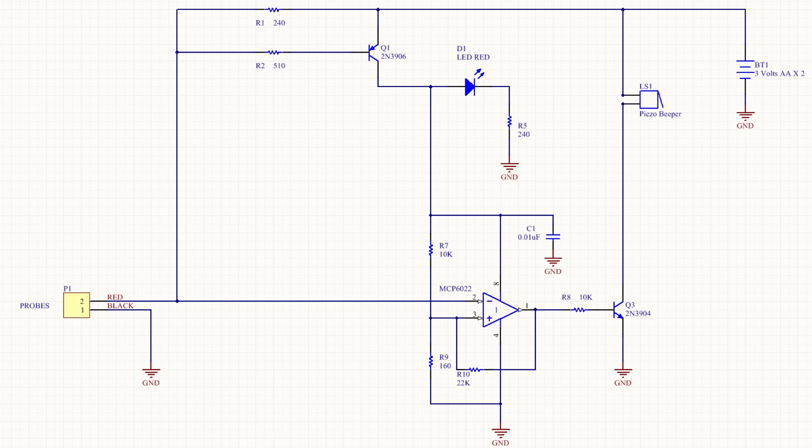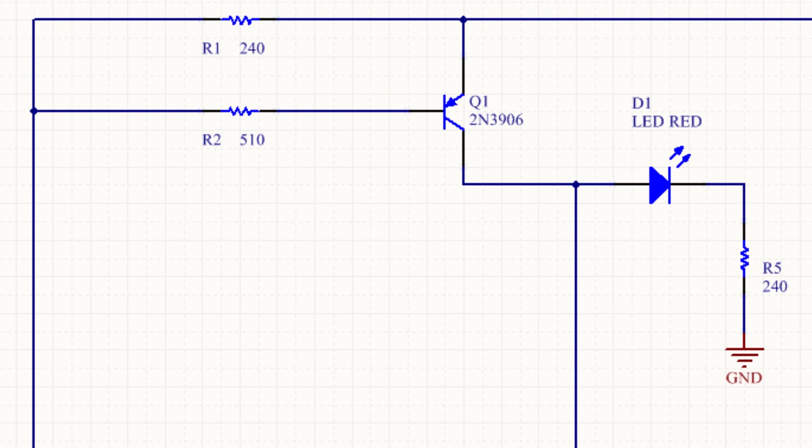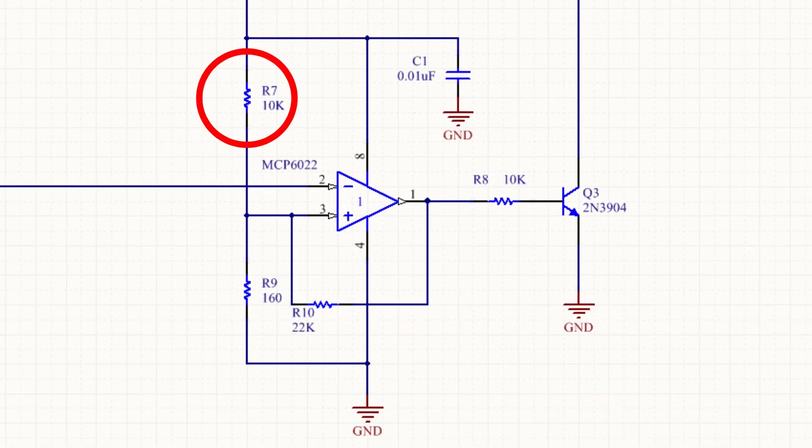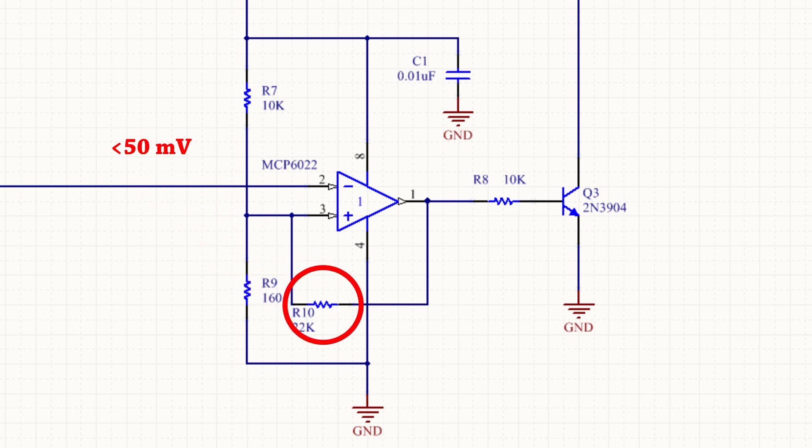We use an MCP6022 op amp as a comparator in this circuit. We turn the power on to this op amp using a simple transistor switch that turns on long before 5 ohms would ever be detected. This makes sure that when the circuit is off almost zero power is consumed from the battery. When current starts flowing in the test leads Q1 turns on and powers the comparator and also illuminates the red LED. The voltage divider formed by R7 and R9 puts about 50 millivolts on the non-inverting input of the op amp. This sets the trigger threshold for detecting below 5 ohms on the input. R10 provides positive feedback. This makes the circuit cleanly switch back and forth between the on and off state without oscillation. R8 and Q3 form a switch which controls the piezo beeper.